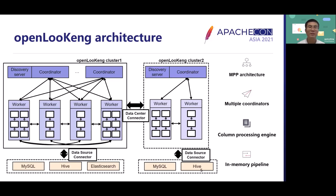As we can see in the figure, OpenLogan has two typical designs. One is the data source connector — we can use it to connect different data sources such as MySQL, HBase, or Elasticsearch. We can also use the data center connector to connect one OpenLogan cluster to another and do queries across network domains. In general, OpenLogan is an MPP-like architecture with multiple coordinators to avoid single coordinator failure. We use the columnar processing engine to fully utilize the computation potential of the hardware, and we also use in-memory pipelines to maximize overall performance.